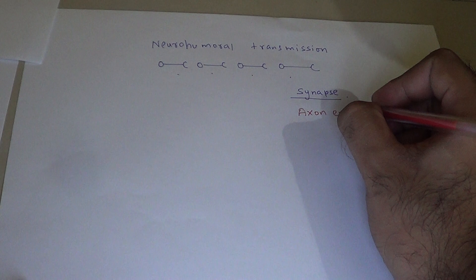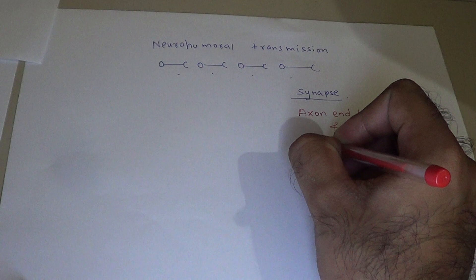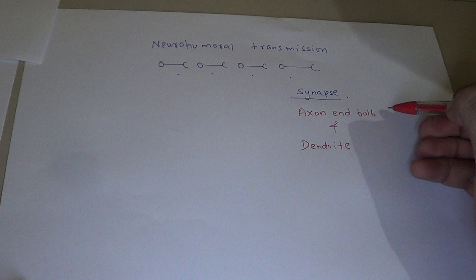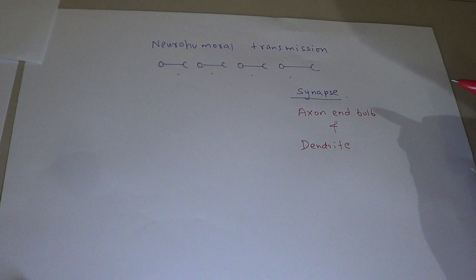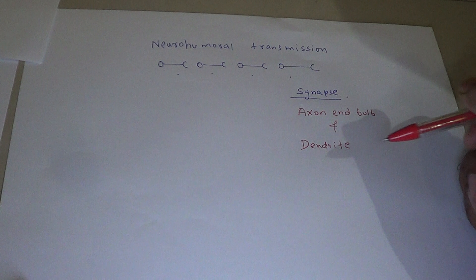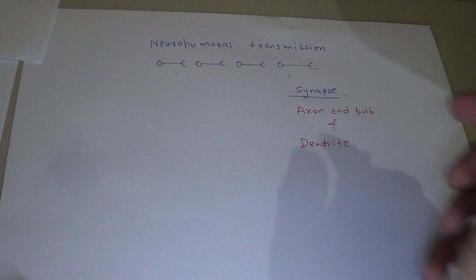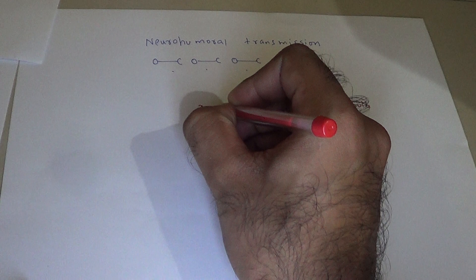It is the gap between the axon end bulb and the dendrite of another neuron — the gap between the axon end bulb of one neuron and the dendrite of another neuron. If the gap is between the axon end bulb of one neuron and the dendrite of another neuron, we call it a synapse.